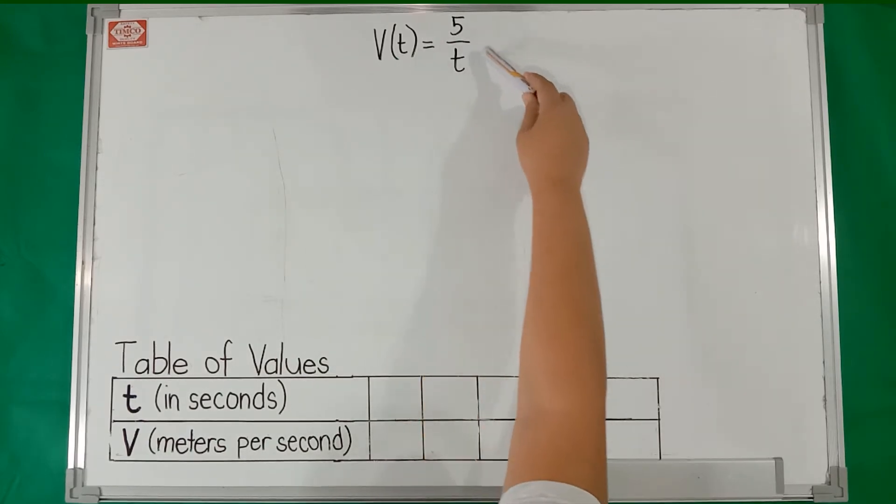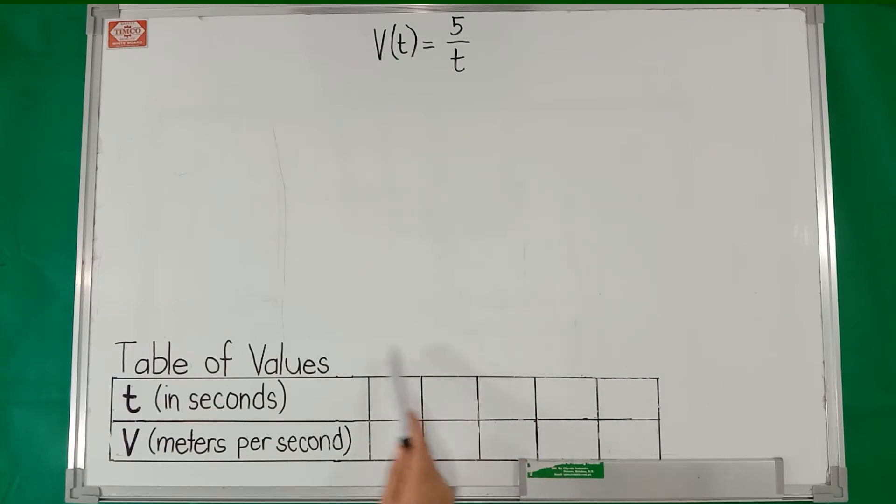Using the function v(t) = 5/t, we can now construct the table of values to obtain the velocity if the walking time of Mang Amado is 2 seconds, 4 seconds, 5 seconds, and 10 seconds respectively. We can also include the initial time, which is 1 second, since it is mentioned in the problem that Mang Amado walks 5 meters west per second.